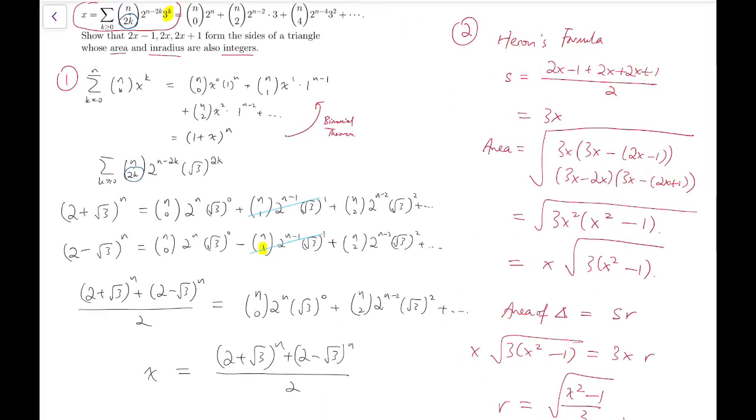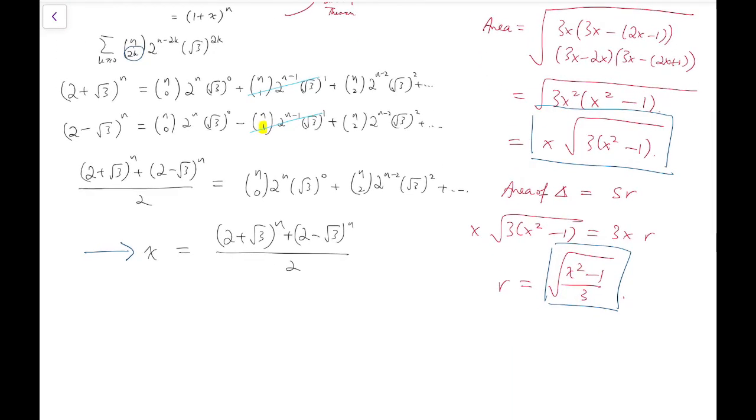It's quite easy to get lost doing so much calculation. We have to keep reminding ourselves our final goal: we have to show that given this x, both the area and inradius expressions are integers. From the expression we've got, I will try to prove that this is an integer, which means x squared minus 1 over 3 is a square number. In other words, I can rewrite x squared equals 3r squared plus 1. If I square this expression and minus 1 over 3, it will still become a perfect square.